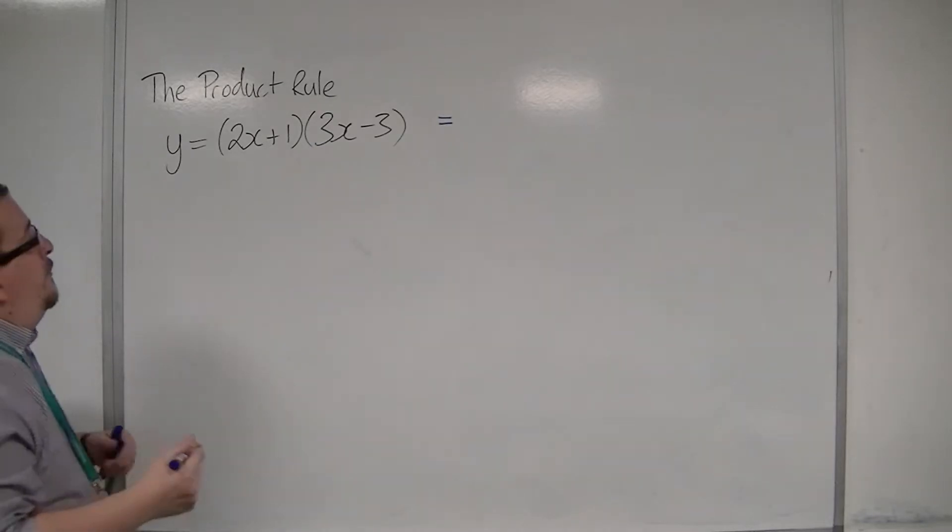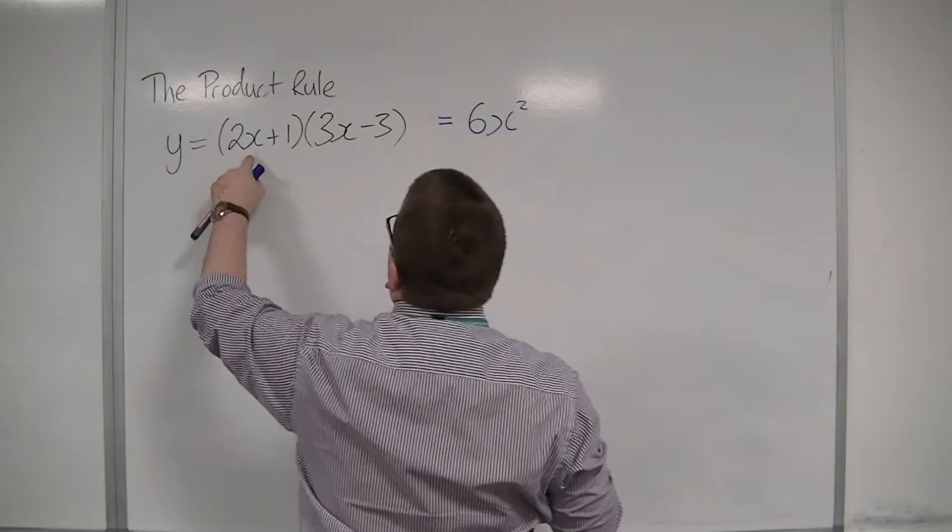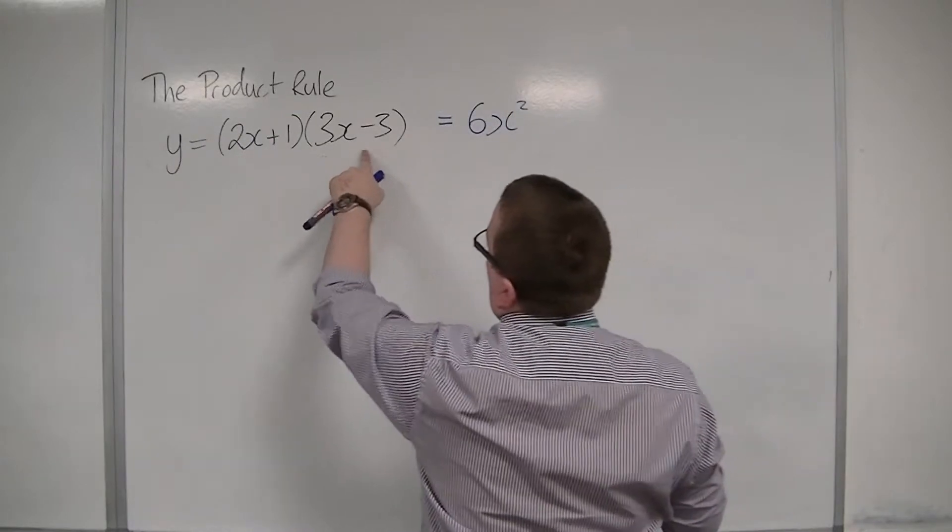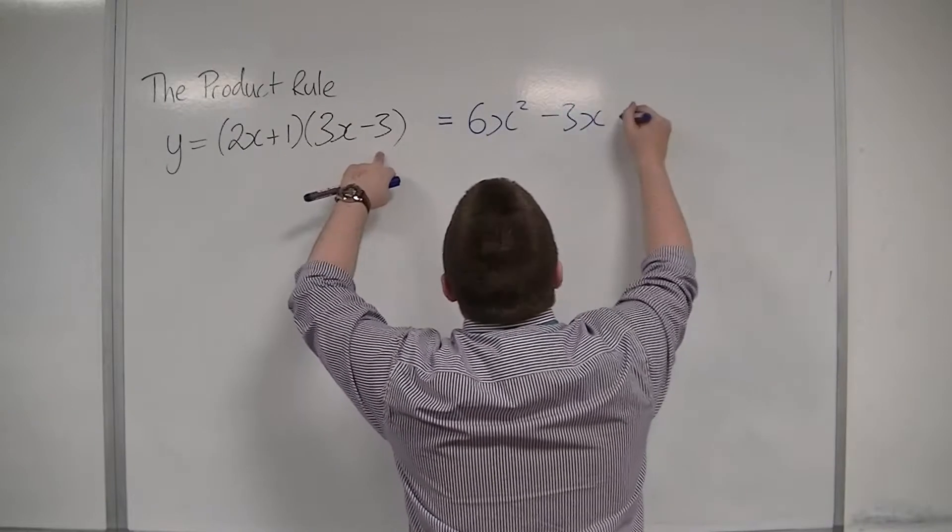So if I expand this, I have 2x times 3x, so 6x squared. I've got 2x times minus 3, so minus 6x, plus 3x and minus 3x. And then I've got 1 times minus 3, so minus 3.